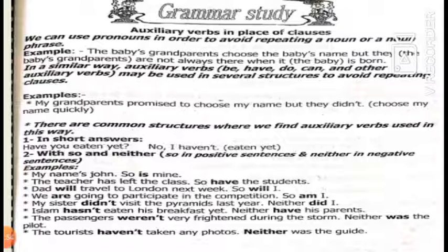In the sentence 'My name is John, so is mine': so is followed by an auxiliary verb. Look at the verb in the first sentence — 'is,' which is verb to be — so we use verb to be (am/is/are). Here we are talking about 'mine,' so we say 'so is mine.' Number two: 'The teacher has left the class, so have the students' — a positive sentence, so we use 'so,' then look at the verb 'has left' — present perfect — so we use have/has.